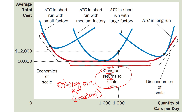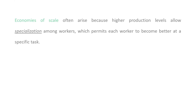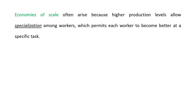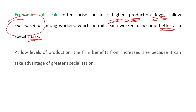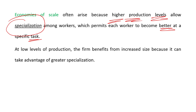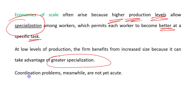This is constant returns to scale — when output level increases, long run ATC remains constant. Economies of scale often arise because higher production levels allow specialization among workers, which permits each worker to become better at a specific task. At low levels of production, the firm benefits from increased size because it can take advantage of greater specialization, and coordination problems are not yet acute.